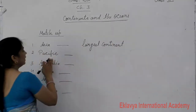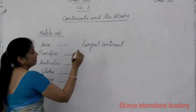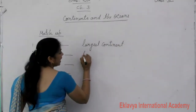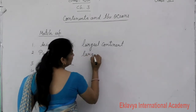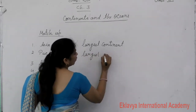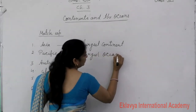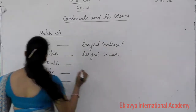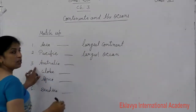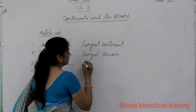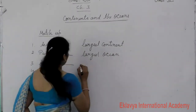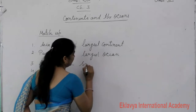Second is Pacific. Pacific is the largest ocean. Third is Australia. Australia is the smallest continent.